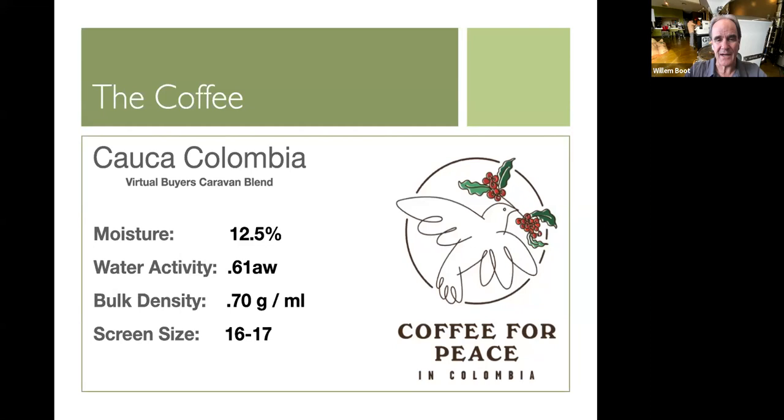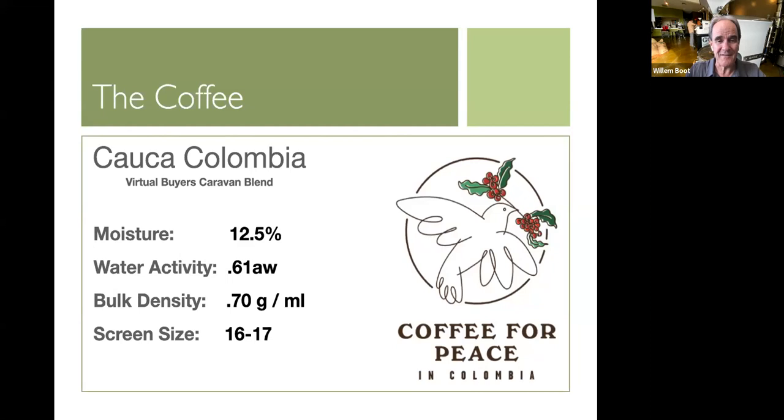Let's look at some aspects related to the Giesen machines, where it comes to the drum speed. Here, you can see for the W6 and the W15A, for these two models specifically, when you look at the setting of the drum speed, which is basically a setting in hertz, and hertz is the voltage frequency, basically the power frequency of the roaster, that's the number actually that you adjust on your operator panel. So that relates directly with the RPMs. And with the W6A and the W15A, if you run your machine at 40 hertz, it will run 58 RPMs. At 50 hertz, 73 RPMs. And at 60 hertz, it's 87 RPM.